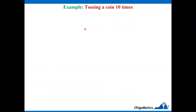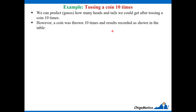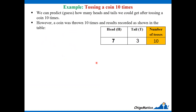Let us look at the example of tossing a coin 10 times. We can predict or guess how many heads and tails we could get. A coin was thrown 10 times and the results recorded as shown in a table. The first column represents heads, the second represents tails, and the last one the number of tosses.